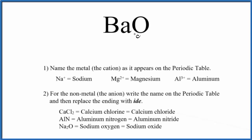To write the name for BaO, we first need to realize we have an ionic compound here. That's because we have a metal bonded to a nonmetal. A metal and a nonmetal, that's an ionic compound.